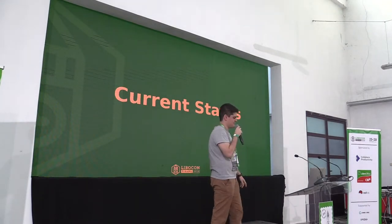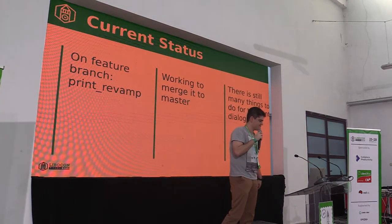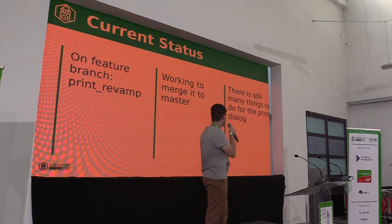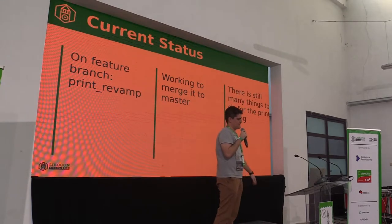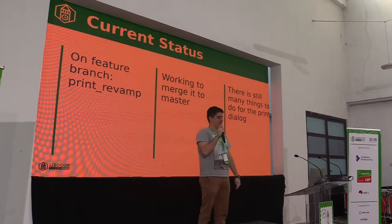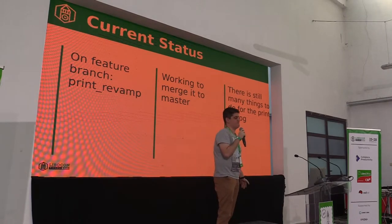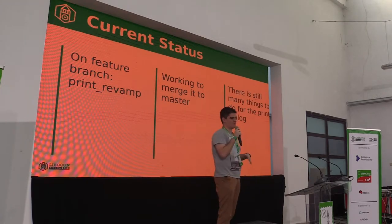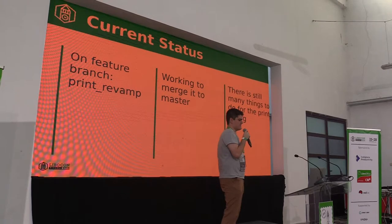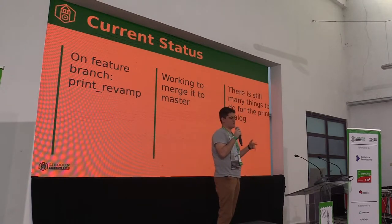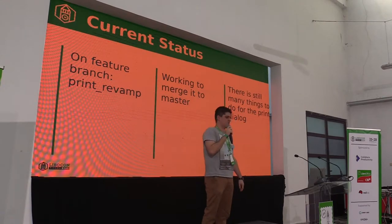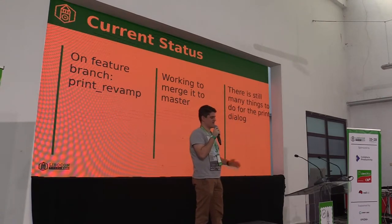Now I'm going to talk about the current status of the project. It is still on a feature branch called 'print underscore event,' and I'm working to merge it faster. There are still many things to do for the print dialogue — there are many requests, and unfortunately I was not able to cover them all in three months. But I'm still available and will continue contributing to the print dialogue so we can make it better.